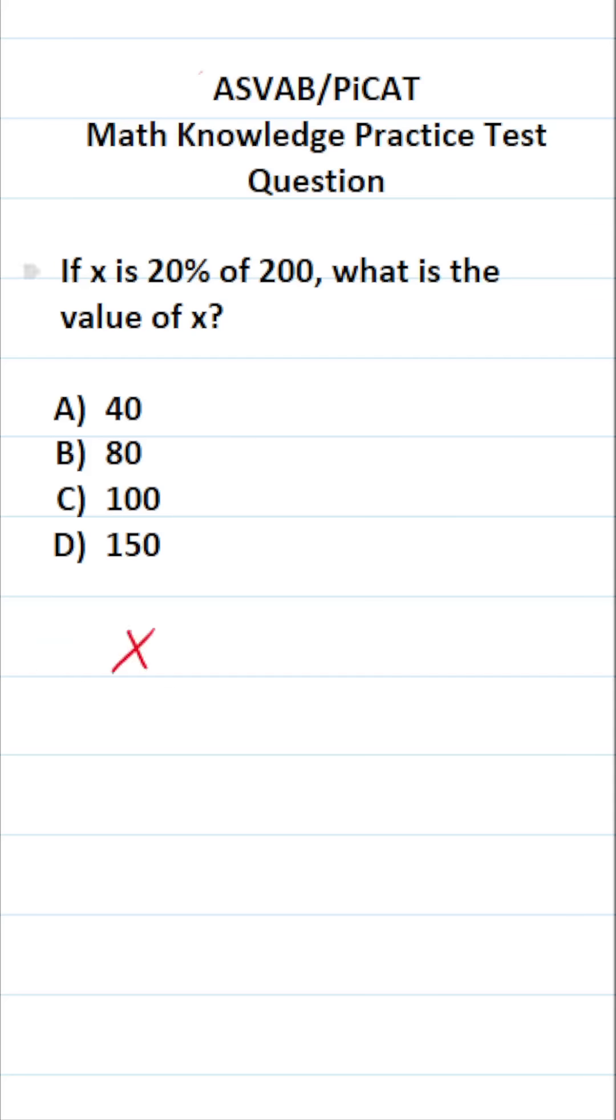So 'x is' in math is always 'equal'. 20% expressed in decimal form is 0.2. So this says x equals 0.2 'of'. 'Of' in math is usually associated with multiplication, 200.